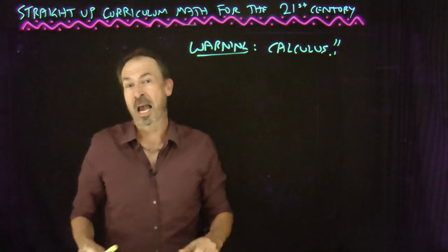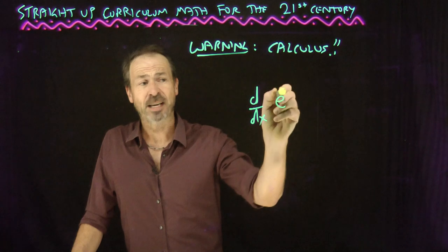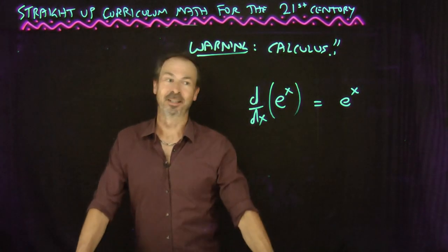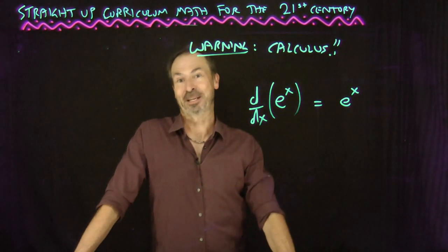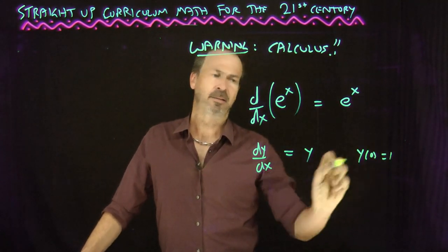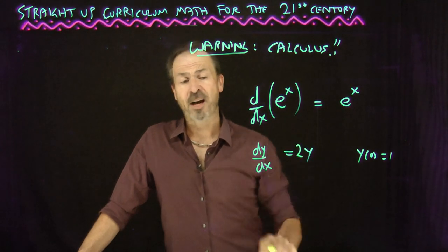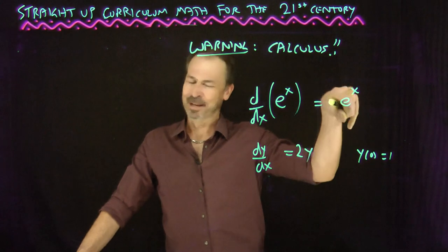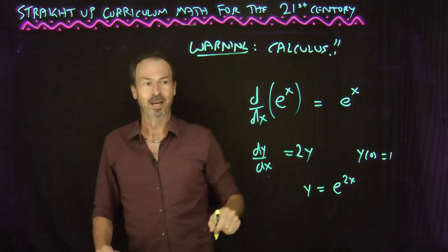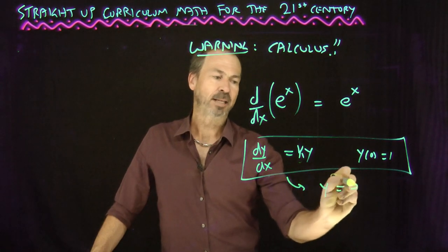One thing you learn in calculus is that there's one particular function that's particularly nice: the derivative of the function e to the x is just itself — phenomenally beautiful. So for any value k, the function whose derivative is k times itself, starting at the value 1 at x equals 0, has the answer y equals e to the kx. The derivative of e^(2x) is 2·e^(2x) by the chain rule.